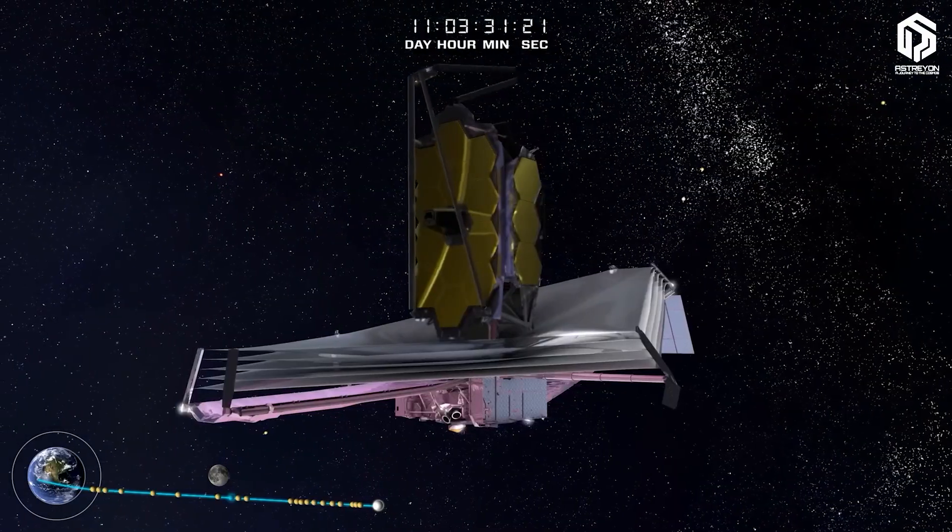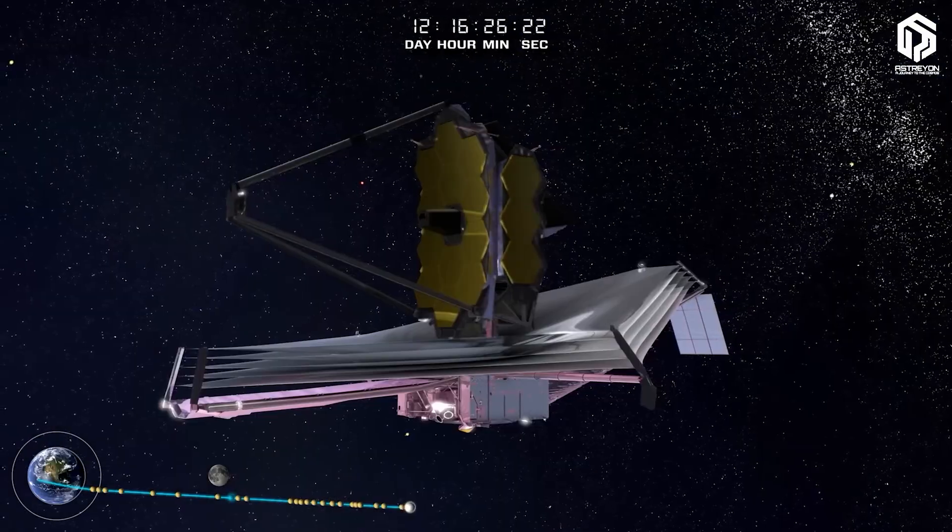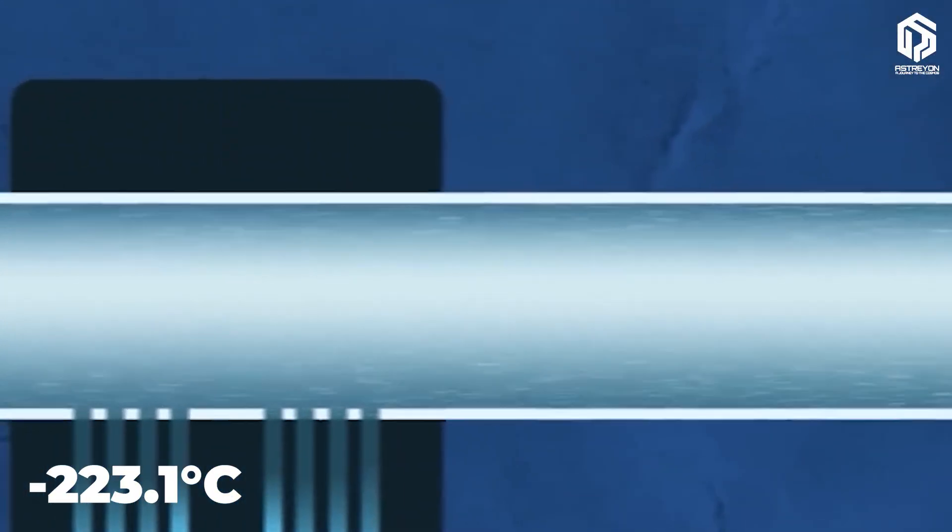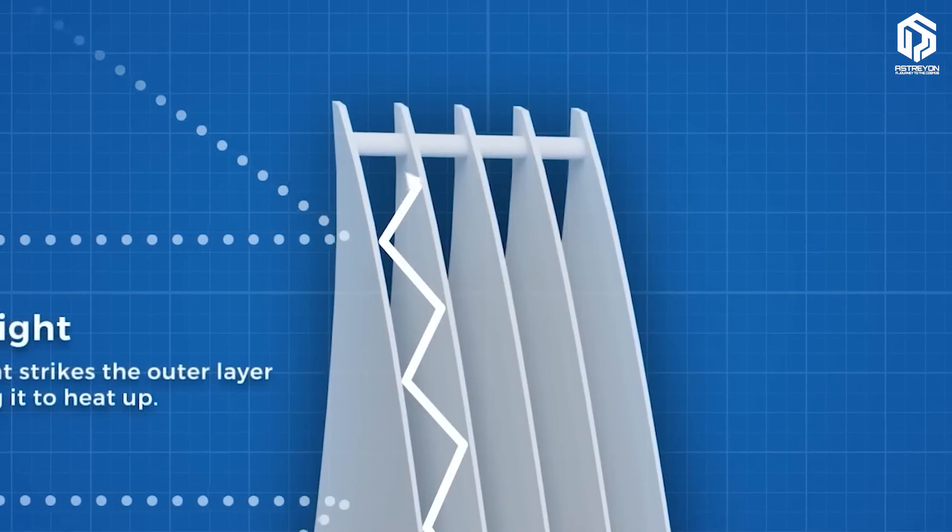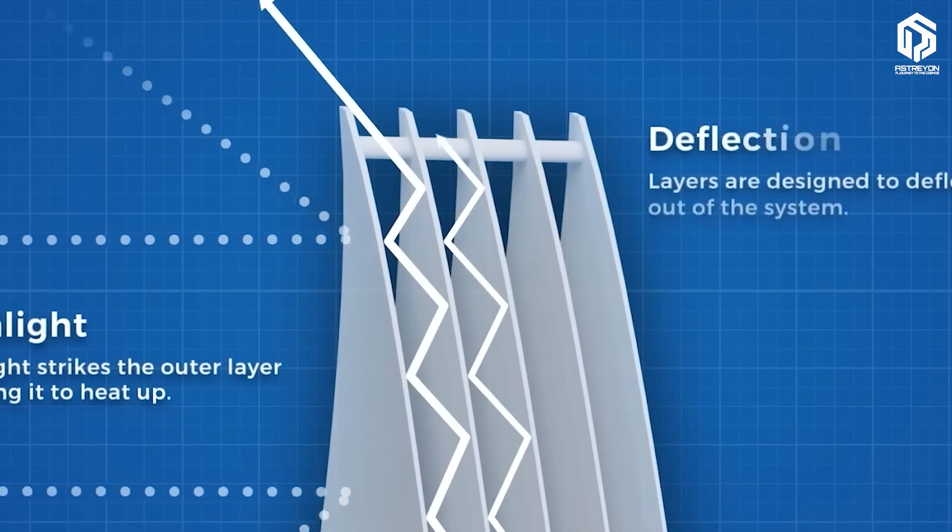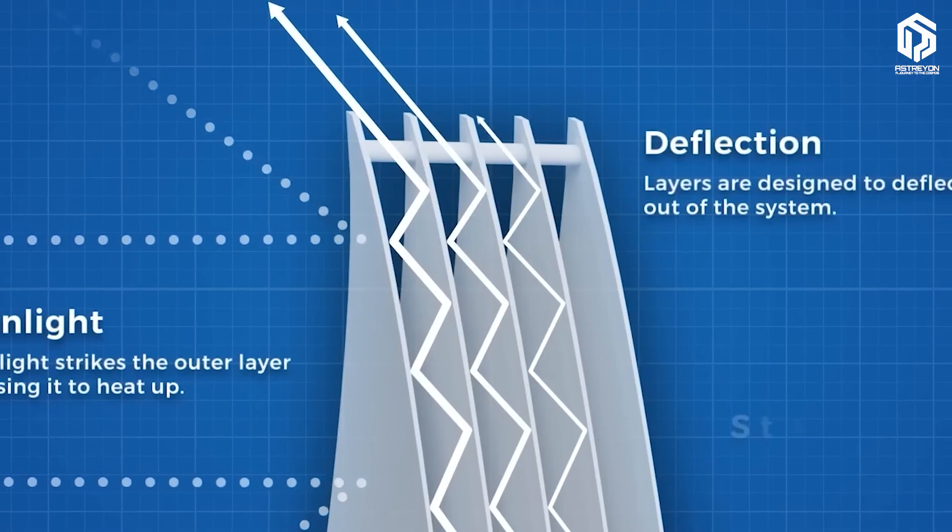This mirror is maintained at a temperature below 50 Kelvin, approximately minus 223 degrees Celsius, to avoid producing interfering light, achieved with a five-layer sunshield that acts like a giant umbrella.